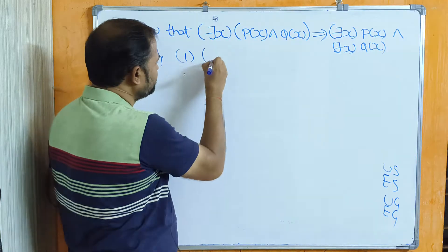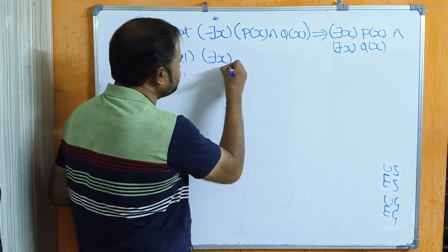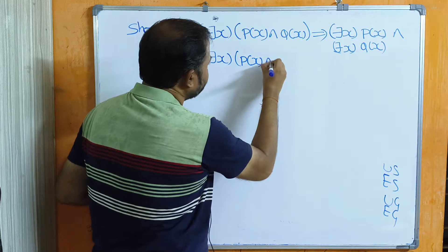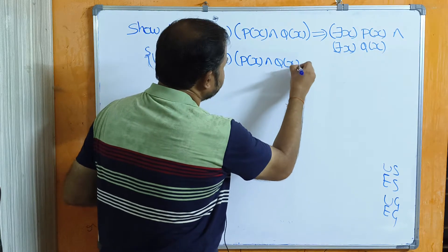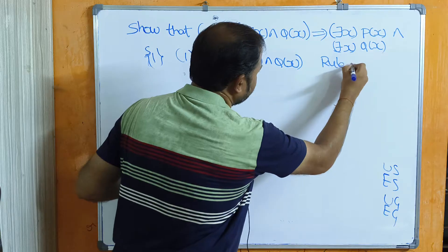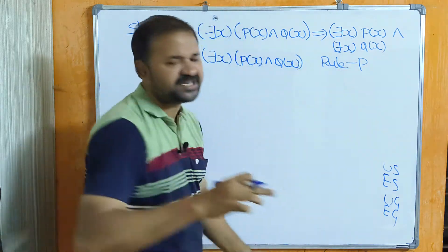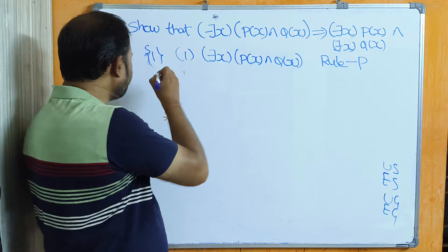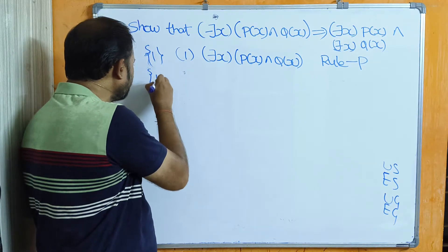So first, premise one, statement formula one: introduce the premise ∃x(P(x) ∧ Q(x)). This is Rule P because this is a new premise which is introduced in the derivation process. Next we are applying operations on this premise.